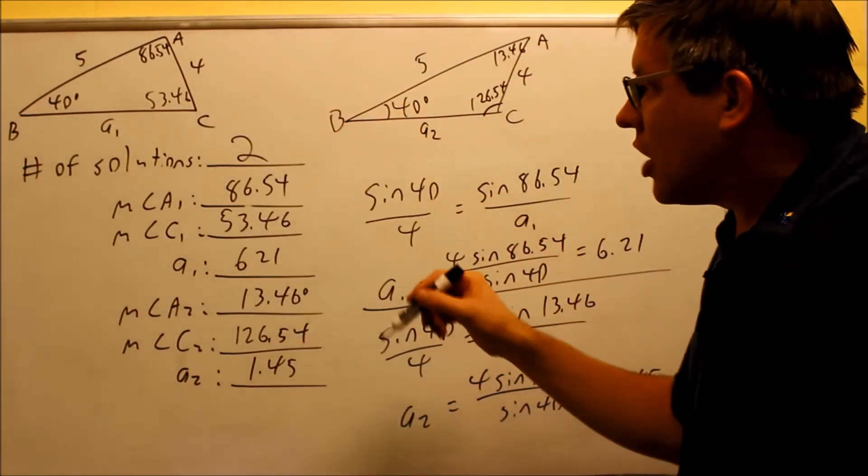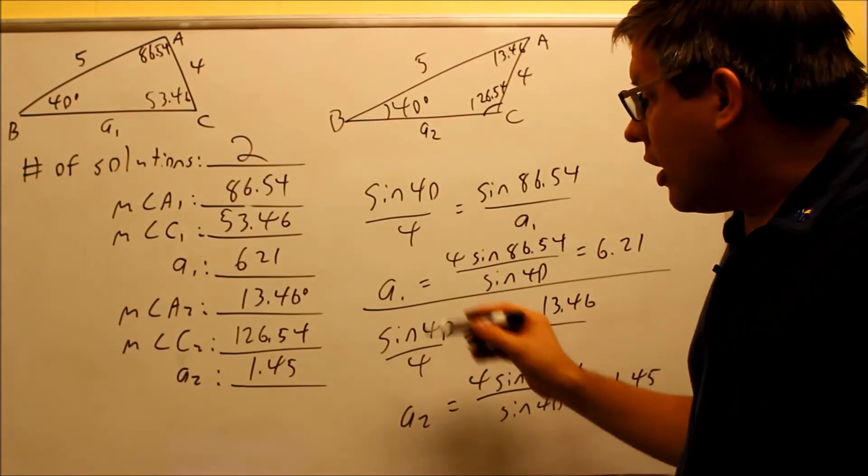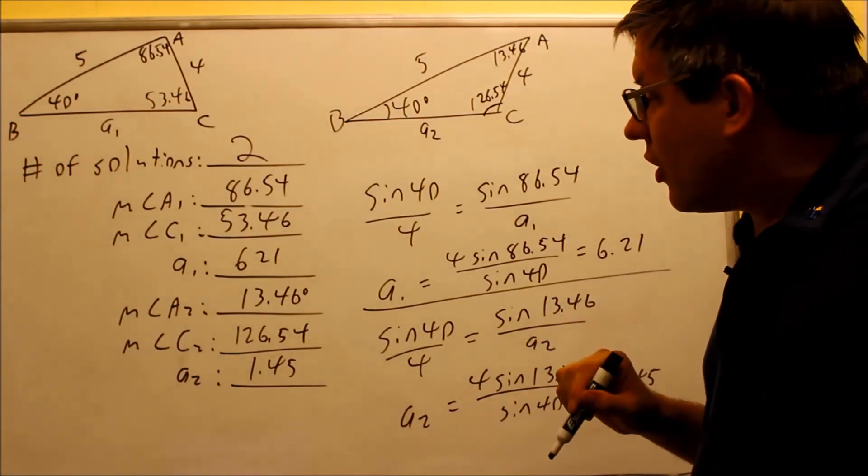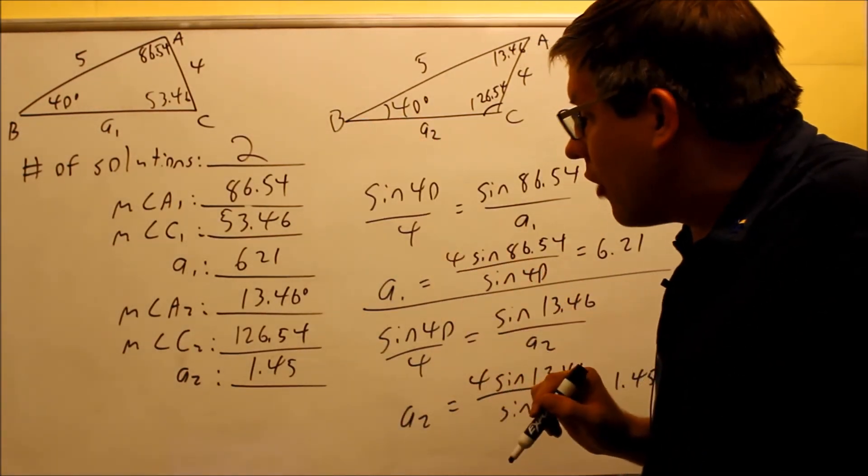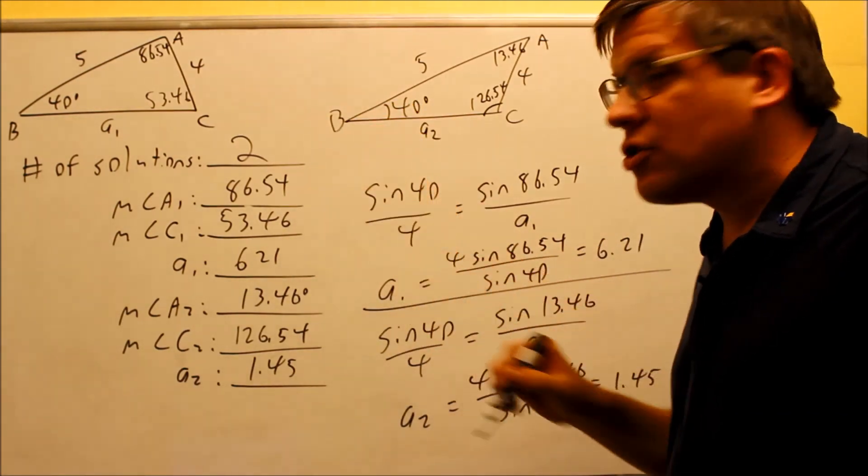Now we have the triangle solved. It is going to be two solutions, because we verified that 126 plus 40 is something less than 180, so we did verify that in fact you have two solutions. We solved and got all the missing sides and angles for each triangle separately.